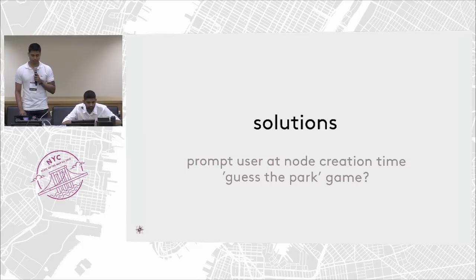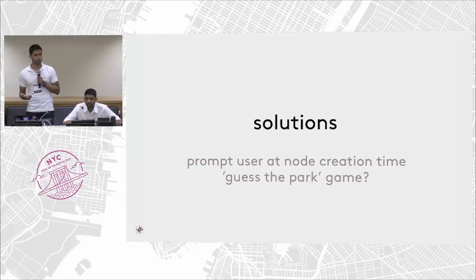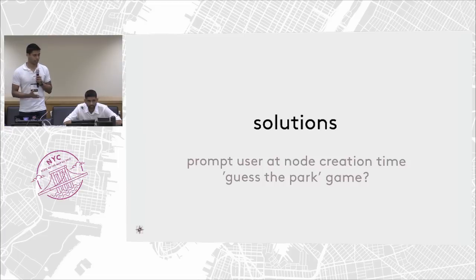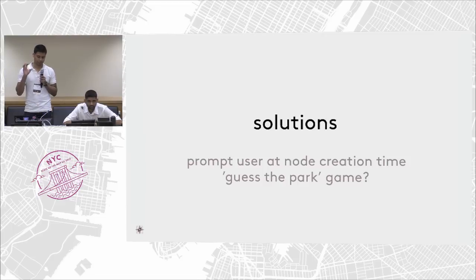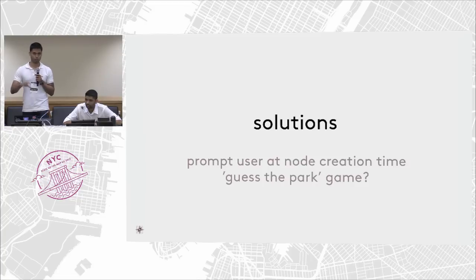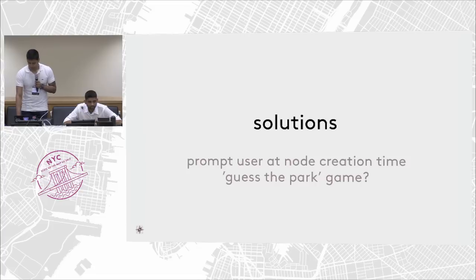Probable solutions include a sanity check at node creation time — maybe prompt the user saying, 'Hey, you just added a park. Do you know the name?' Or we can identify all nodes that have no names. Maybe even if you just want to solve the park problem, we could create a game called 'Guess the Park' where you show a particular park and ask users to identify it, then figure out the name from there.